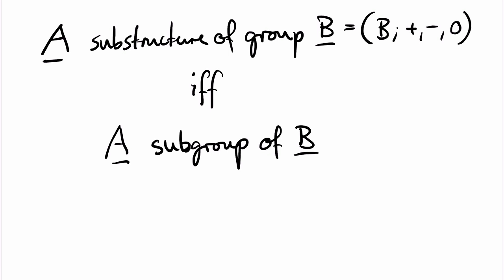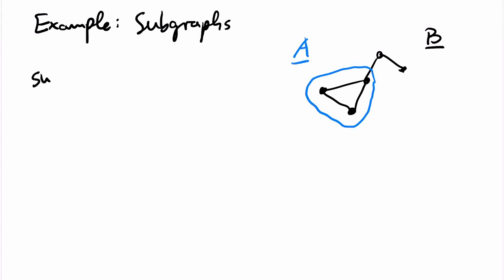And in fact, substructures of a group B are precisely the subgroups of B. This would not be true if we would only have one symbol for composition in our structure. Let's have a look at the substructures in the context of graphs.